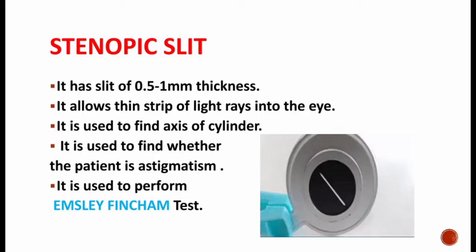When we place a stenopic slit in front of our eye, it allows a thin strip of light rays into the eye. Stenopic slit is used to find the axis of the cylinder and also to find whether the patient has astigmatism. It is also used to perform the M-Slave Fincham test, which is used to find whether the colored halos arise from cataract or from glaucoma.